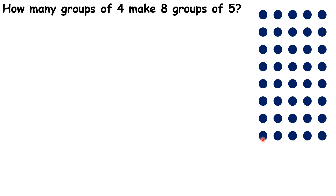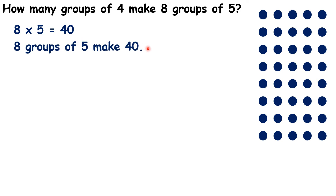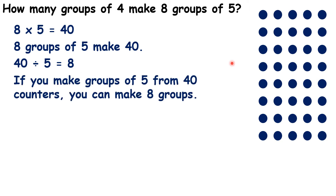And how many counters do we have? Well, we can count them in fives: five, ten, fifteen, twenty, twenty-five, thirty, thirty-five, and forty. So we have shown that eight times five is forty, because here we have eight groups of five counters. We have also shown with this array that forty divided by five is eight, because if you make groups of five from forty counters, like we have here, you can make eight groups.